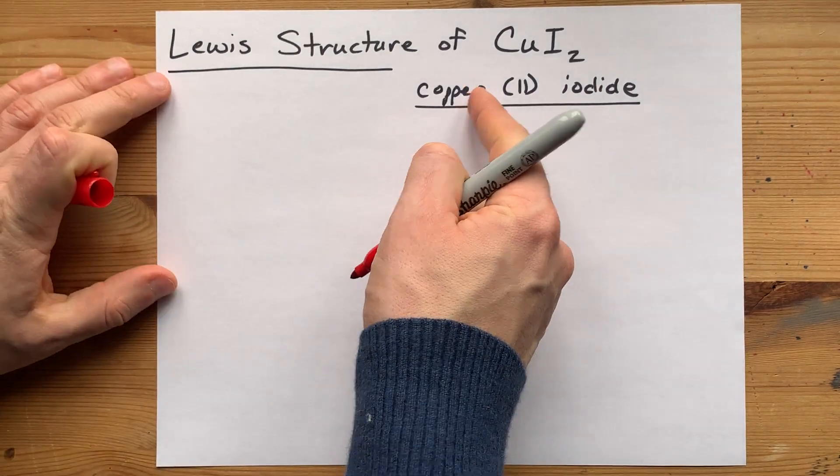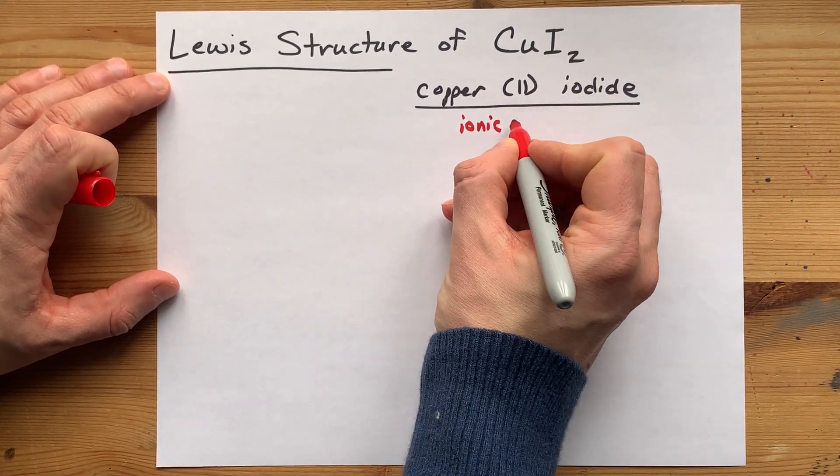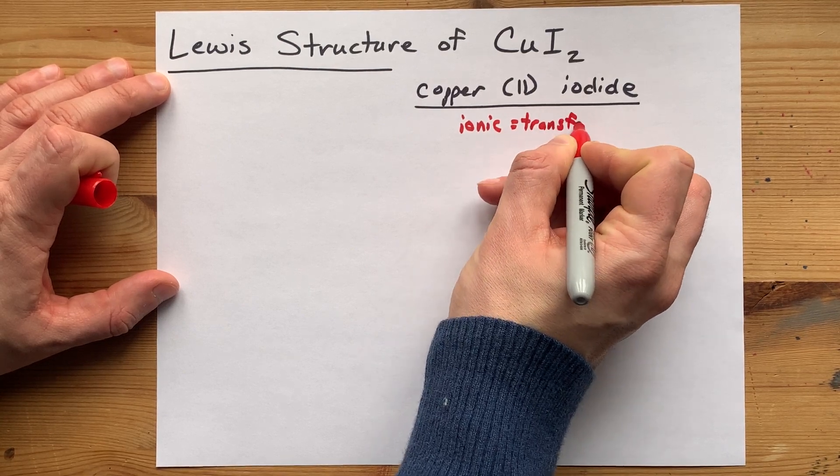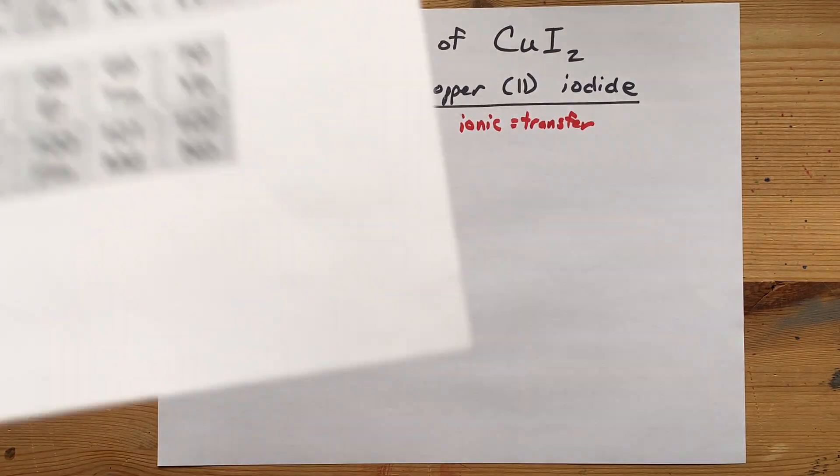That's important because metals and non-metals always combine to make ionic compounds, and that occurs by a transfer of electrons. Let's watch how that might happen.